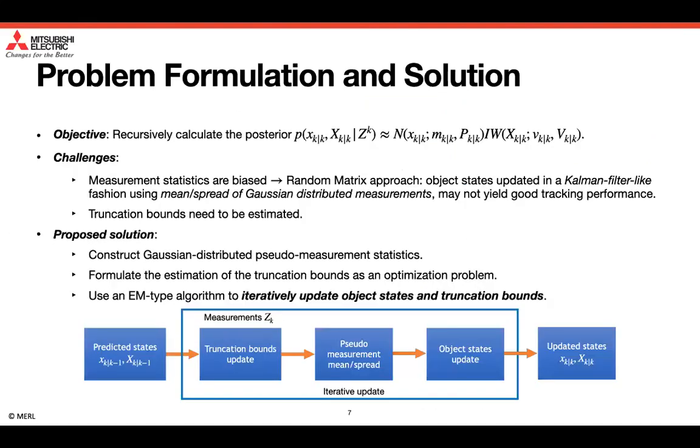Given the extended object dynamic and measurement model, we are interested in recursively calculating the posterior which is approximated as the product of the kinematic state PDF and the extended state PDF. This means that we assume that the object kinematic state and the object extended state are decoupled. Two challenges arise with the use of hierarchical truncated Gaussian measurement model. First, the measurement statistics are biased. Therefore, the random matrix approach, in which object states are updated in a common filter-like fashion using mean and spread of Gaussian distributed measurements, may not yield good tracking results.